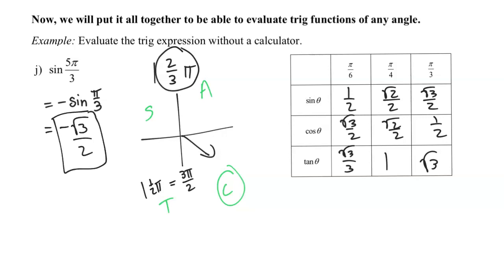That took about a minute and 20 seconds to explain, but I want you to be able to do that in 10 to 15 seconds at most — that's the goal we're trying to shoot for. Because when we do this in calculus, this is going to be like step one of five. If it takes a long time to figure out this value, we won't have as much time for the actual calculus aspects of a question.